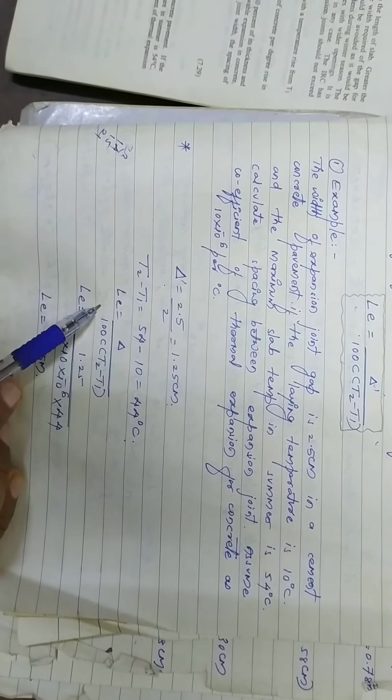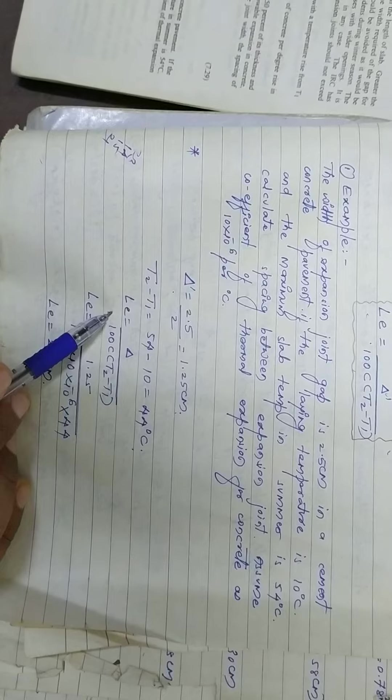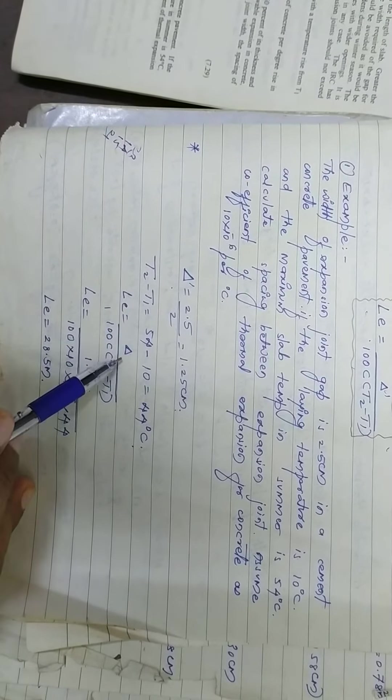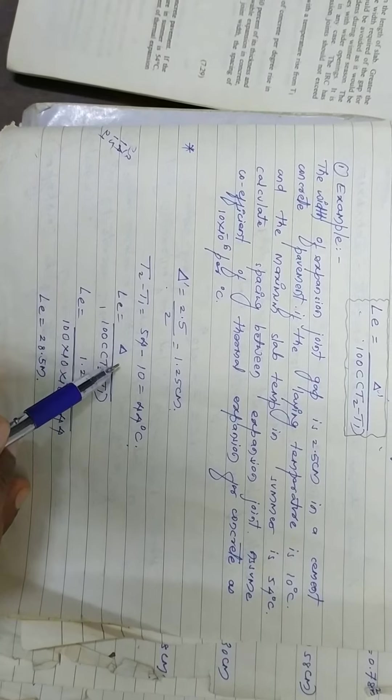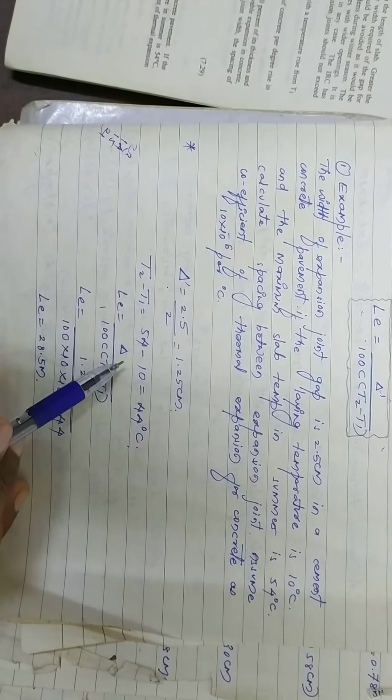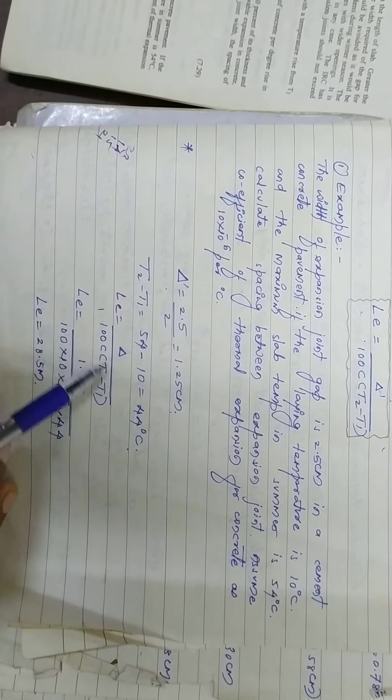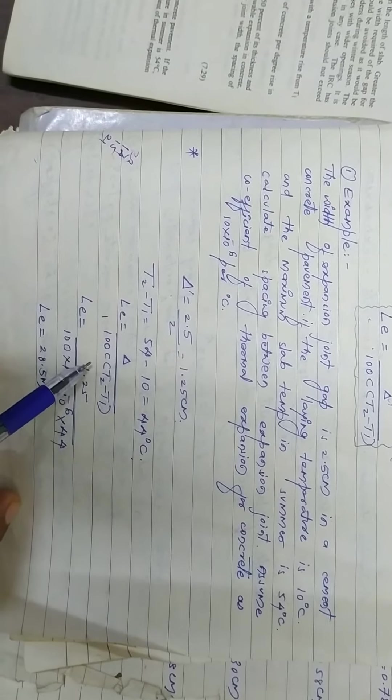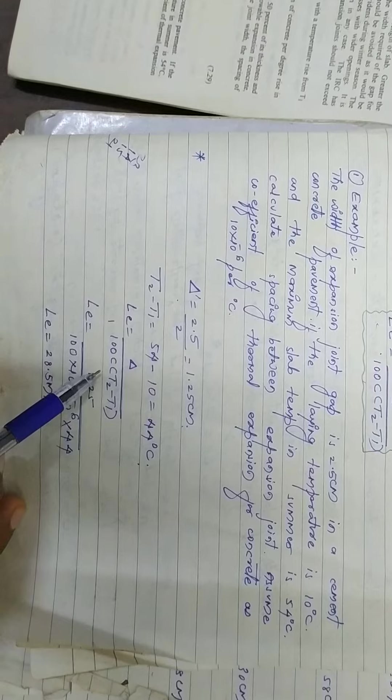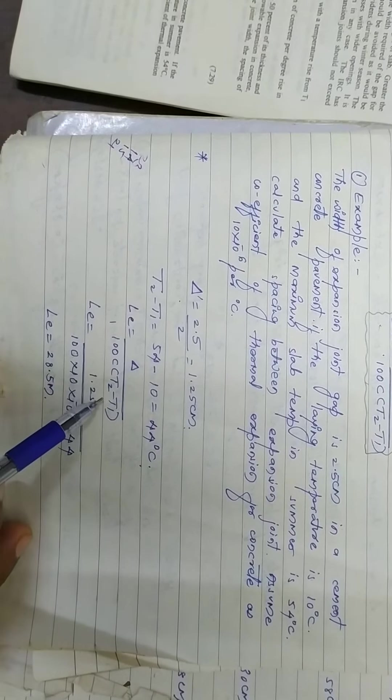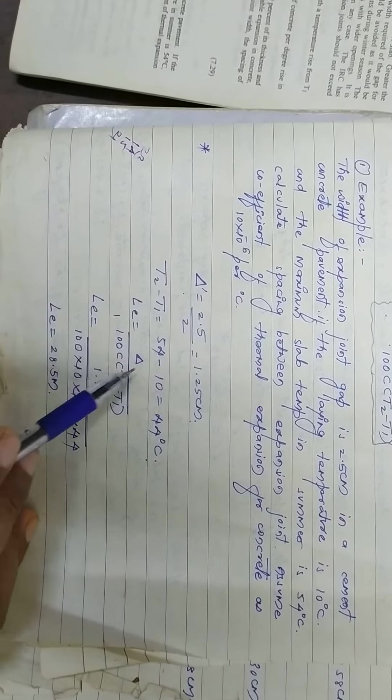LE is the length of the slab, and delta is the maximum expansion with respect to the length of the slab. So delta divided by L equals 100 C, where C is the thermal expansion of concrete into T2 minus T1. So rise in temperature. Now put the value in this equation.